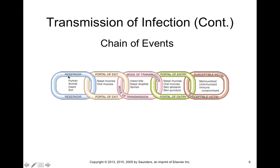These microorganisms must travel from their reservoir through a portal of exit. If it's a human, animal, or insect, that could be through the nasal or oral mucosa. Then this needs to be transmitted to another organism through a mode of transmission, which could be an insect bite, nasal droplets from coughing or sneezing, semen if it's a sexually transmitted disease, other body fluids, or fecal-oral routes.